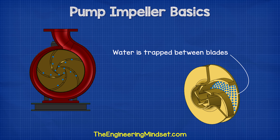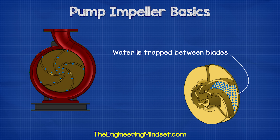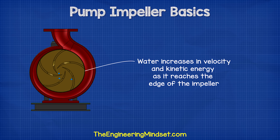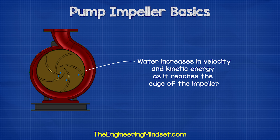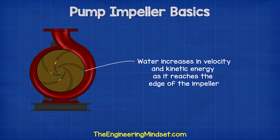The water enters into the eye of the impeller and is trapped there between the blades. As the impeller rotates, it imparts kinetic energy or velocity onto the water. By the time the water reaches the edge of the impeller, it has reached a very high velocity.